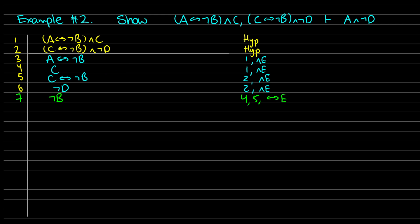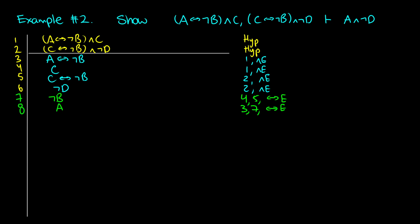That was convenient, and it's convenient because now in line 8 — what do I need to get? I need to get A and not D. Well, I have not B, and I know that A if and only if not B. I can use biconditional elimination on line 3 using line 7 to get A out of it, because it follows the pattern: I have not B, I have A if and only if not B, so not B is the same thing as A, so we can write it down. At this point I just have one more step — in line 9, I have A and I have not D, from lines 6 and 8. So I can use conjunction introduction to get A and not D. This comes from lines 6 and 8, conjunction introduction, and therefore the proof is complete.